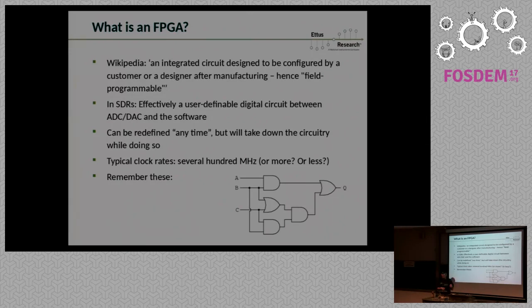What is the typical clock rate for such an FPGA? That varies — there's no one answer, but it's not gigahertz. It's typically in the order of several hundred megahertz. If you come from a software world, maybe that doesn't sound like a lot — but it's actually more than you need in most cases, and I will tell you why in a moment.